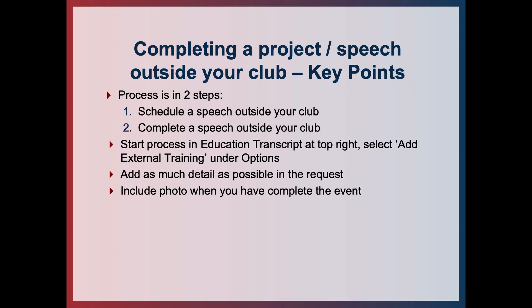So that's it — simple! You can now complete projects outside of your club and get credit on your Toastmasters journey. The key points: it's a two-step process. First, enter the details to validate that the project meets the requirements and your VPE will accept or deny it. Once you've done your speech, complete the request to get the credit and move on to the next project. Start in your Education Transcript and under the top right Options button select Add External Training. Add as much detail as possible in the initial request to ensure approval, and when you've completed the project include a photo so it's clear you've done it. Hopefully that's useful and you'll now be able to do projects outside of your home club — thank you.